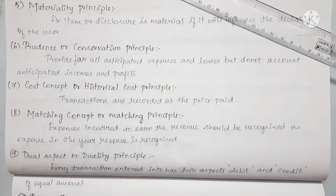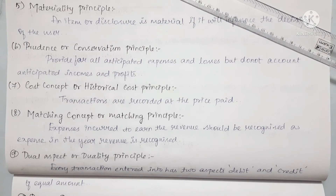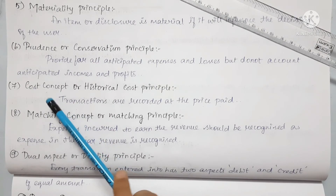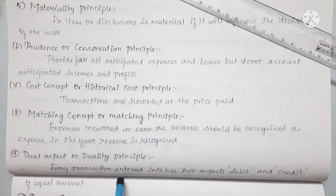Next is the historical cost concept. Assets are recorded at their original purchase cost, not at their current market rate. Even if the asset's value changes in the future, we record it at the historical cost — the cost at the time of the transaction. This is called the cost concept or historical cost concept.